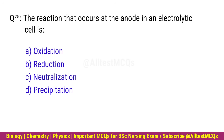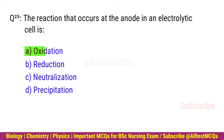Q25. The reaction that occurs at the anode in an electrolytic cell is? Correct option is A. Oxidation.